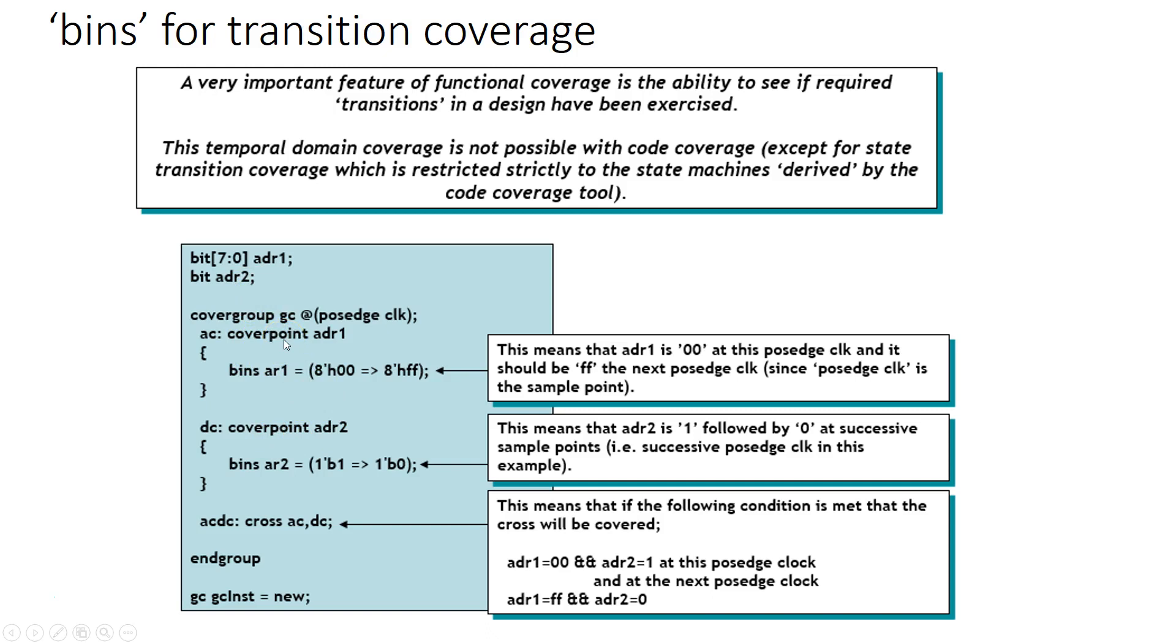Now inside these cover points I have declared bins to cover transition coverage. For example bins AR1 states that if the value of ADR1 is 8'h00 at this positive edge of clock, the next positive edge of clock it should be 8'hFF. So basically you have to make sure that your testbench creates a test that produces this transition, and thereby we make sure that, for example, if you're reading from a cache line, the very next cycle should be a write invalid. So this is just a very simple example of how you can declare a bin for transition.